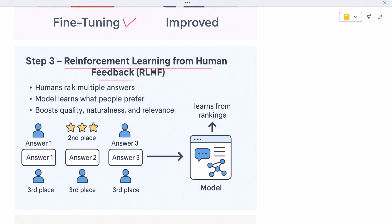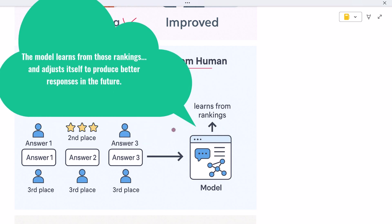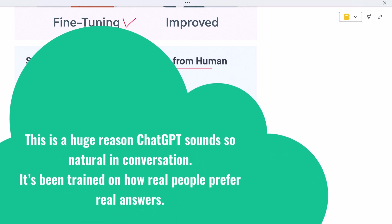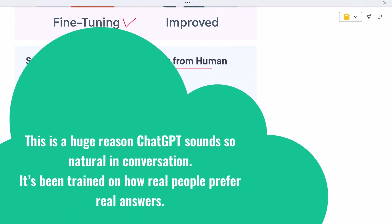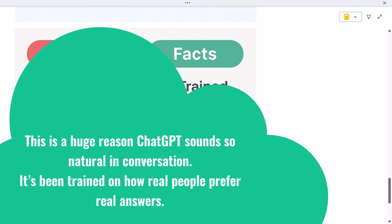But now the model is given multiple possible answers to the same question. Then humans rank those answers: best, second best, and so on. The model learns from those rankings and adjusts itself to produce better responses in the future. This is a huge reason ChatGPT sounds so natural in conversation. It's been trained on how real people prefer real answers.